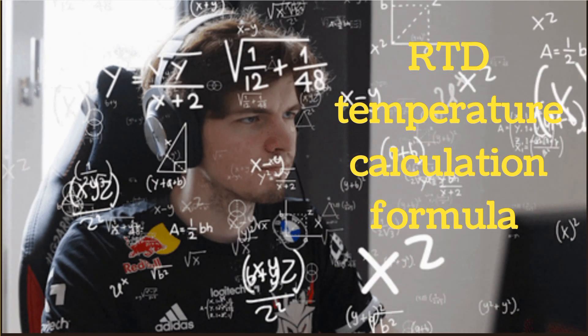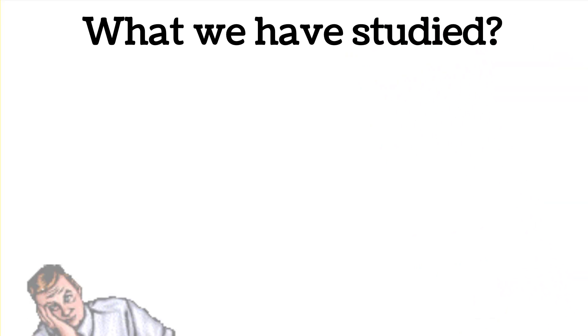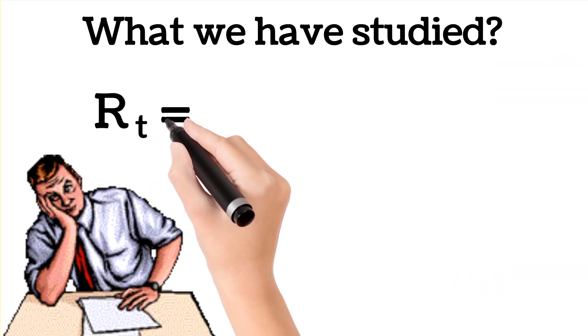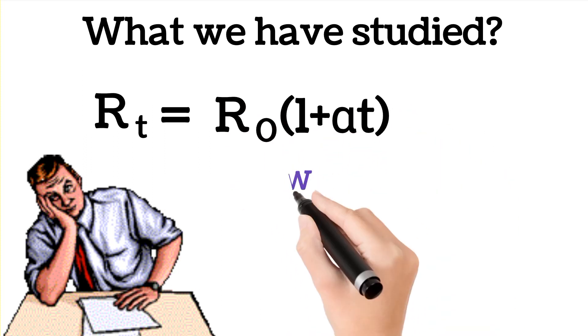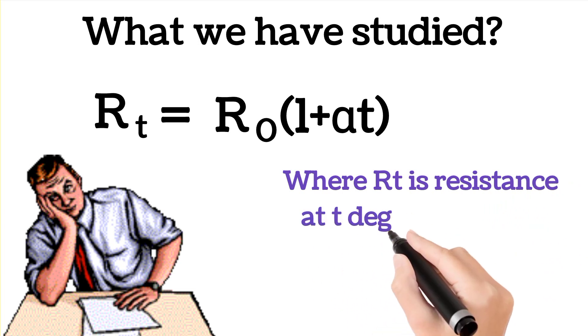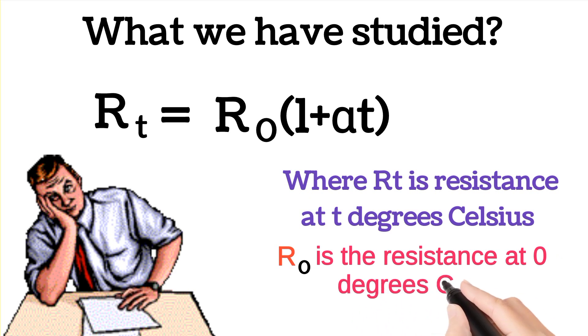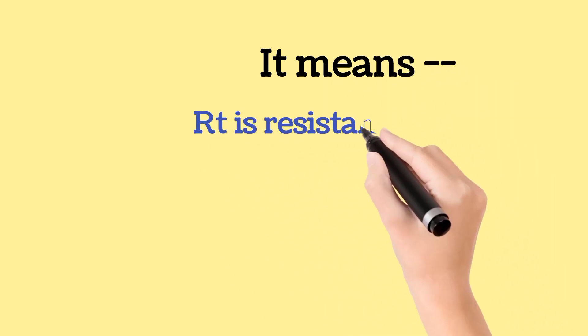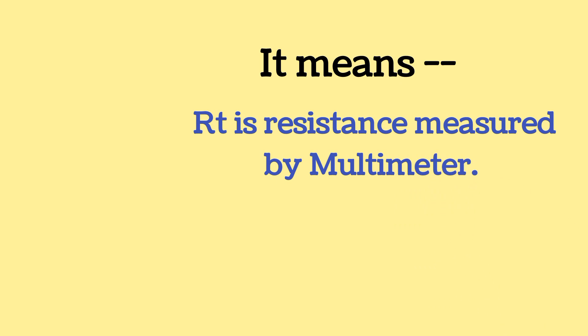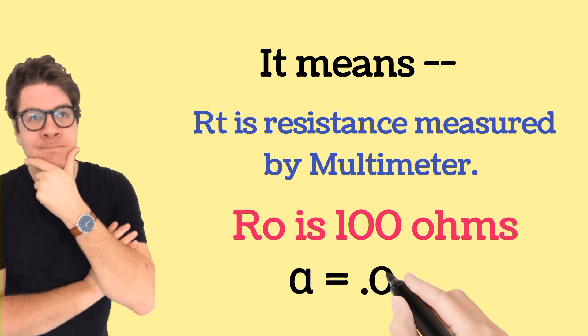Now we will see RTD temperature calculation formula. So what we have studied: RT is equal to R0 times 1 plus alpha T, where RT is the resistance at T degree Celsius. It means RT is the resistance measured by multimeter, R0 is 100 ohms, alpha is equal to 0.00385.